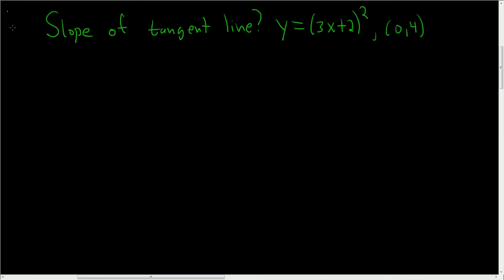Okay, so in this problem, we're asked to find the slope of the tangent line to the graph of this function here at point (0,4). So, solution.